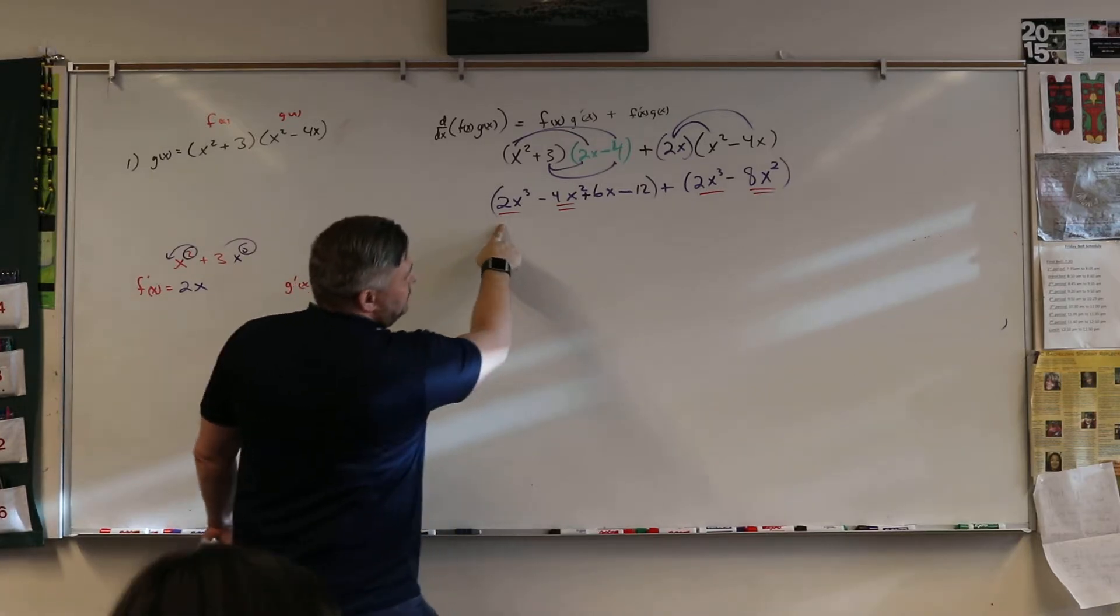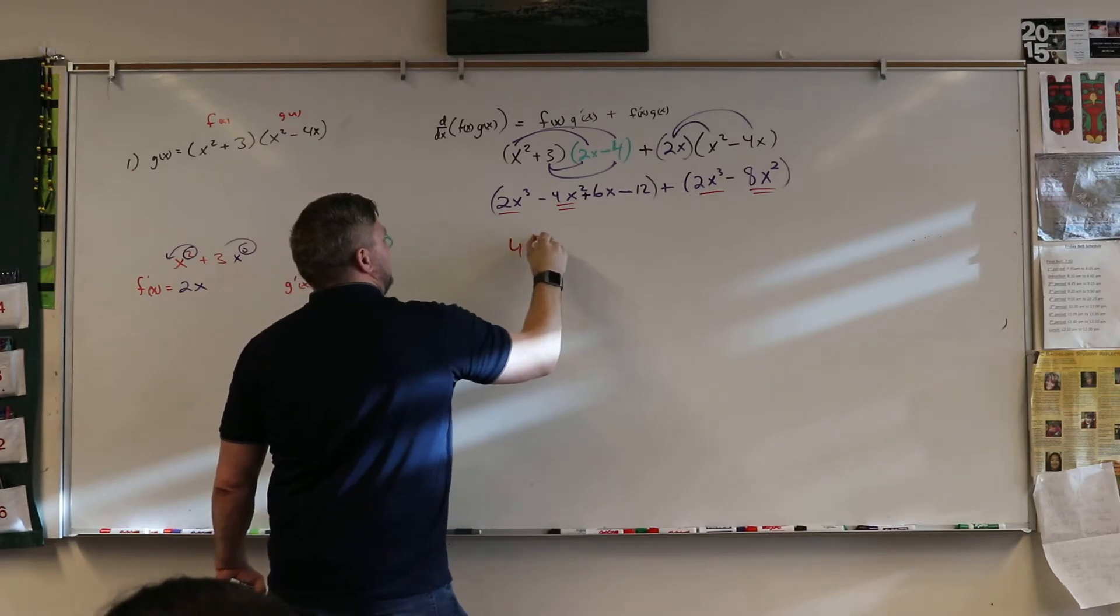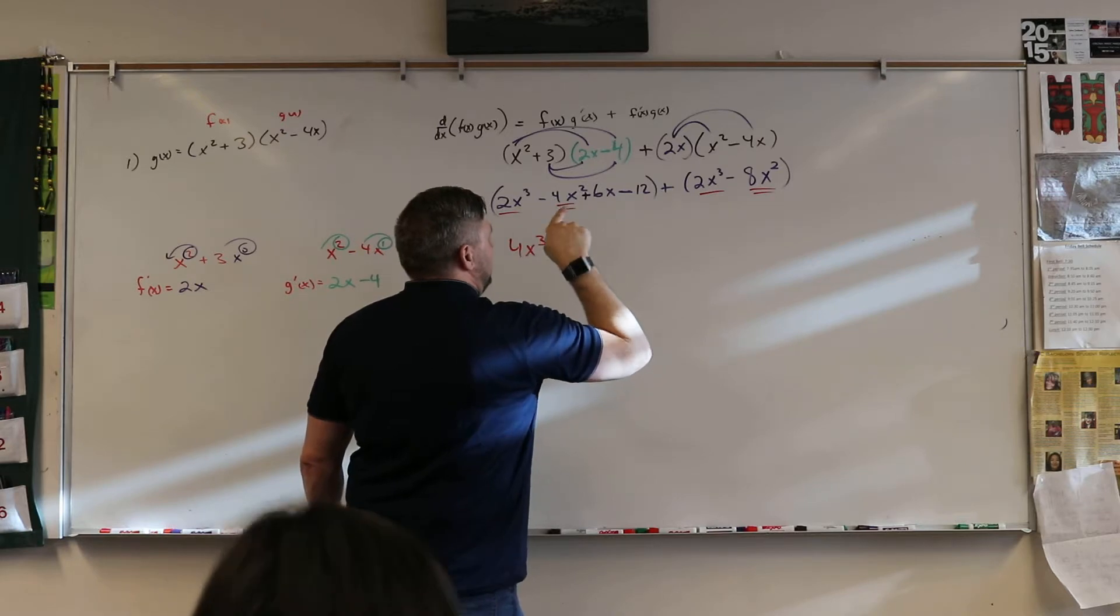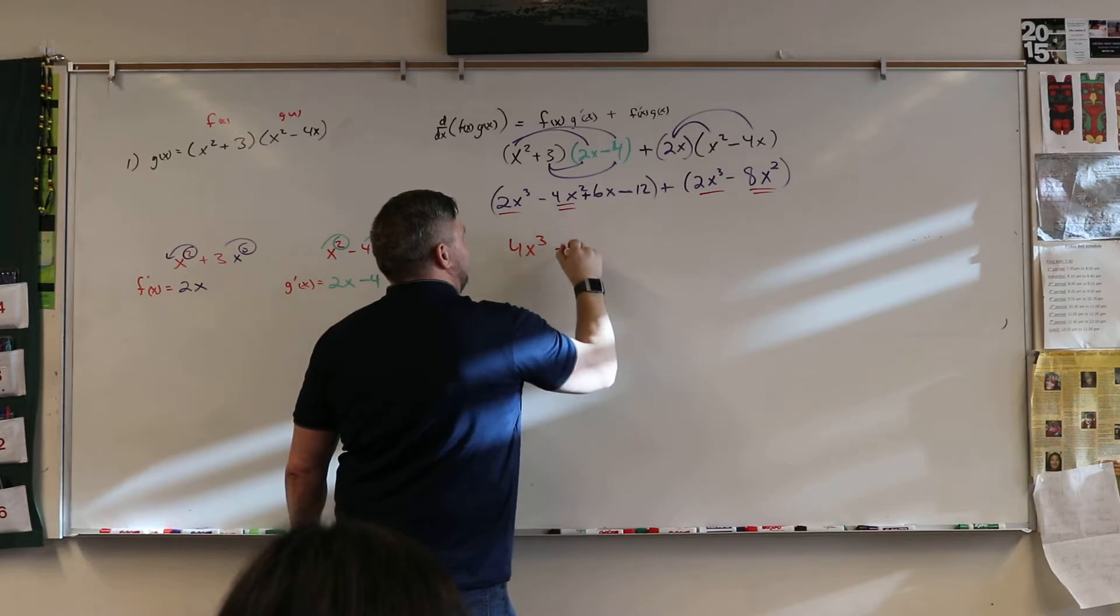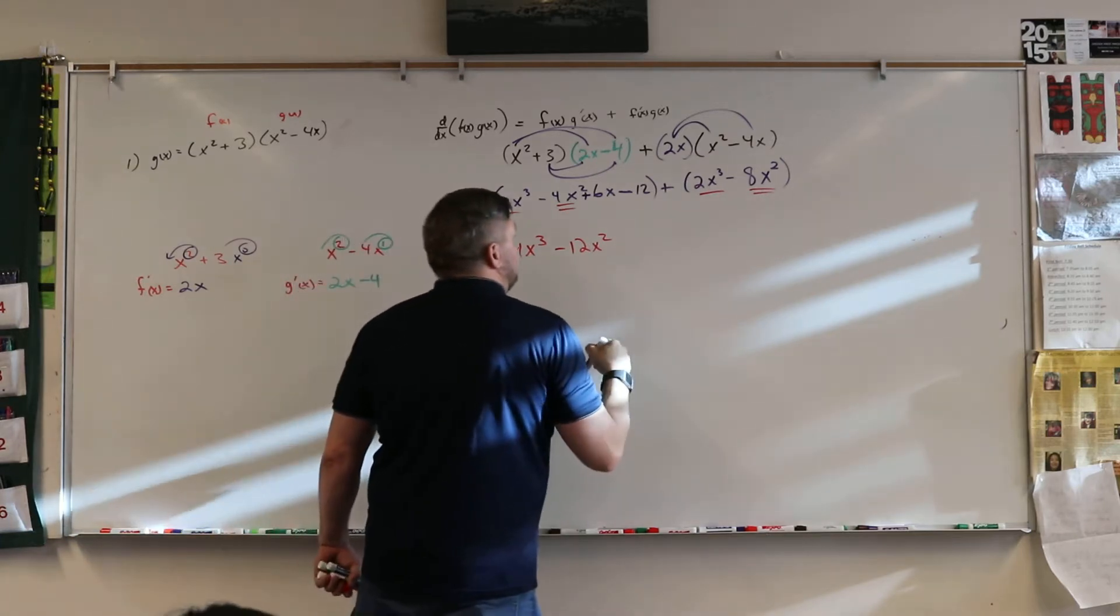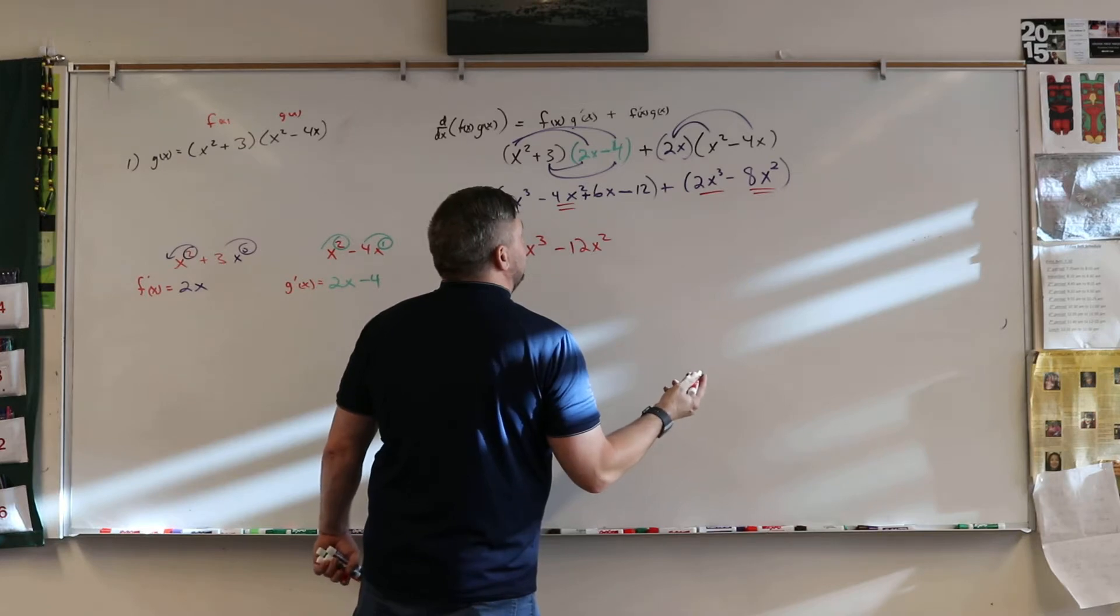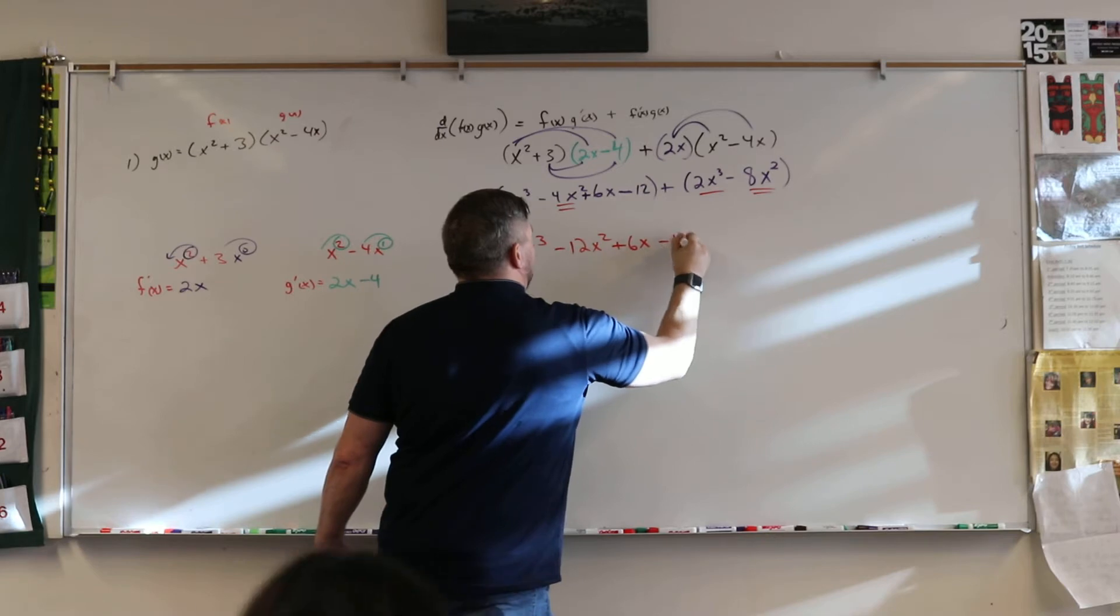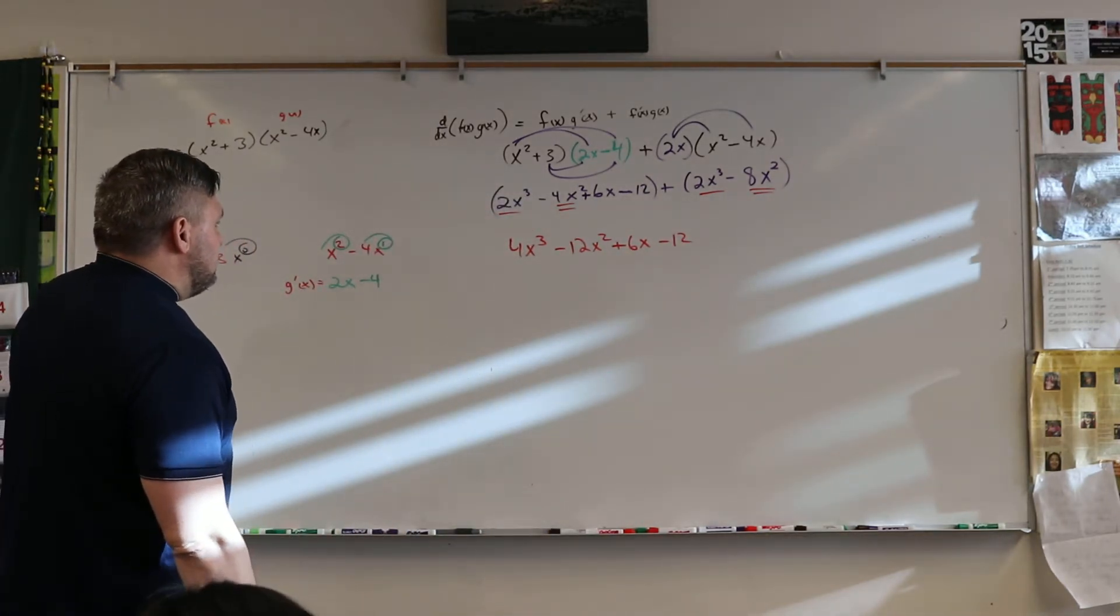So 2 plus 2x cubed is 4x cubed. And then negative 4x squared minus 8x squared would be minus 12x squared. And then 6x doesn't go with anything, so that would be plus 6x, and then minus 12. Does that work?